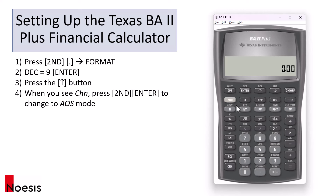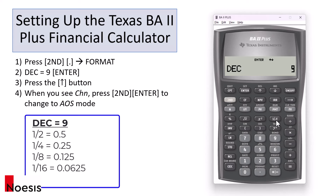So you would press second decimal to enter the format function. You can type anything — for example, you can pick between four to six if you want. Personally, I use nine. So after you press nine, press enter to save it.